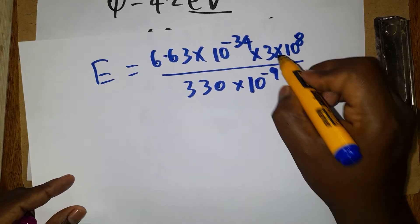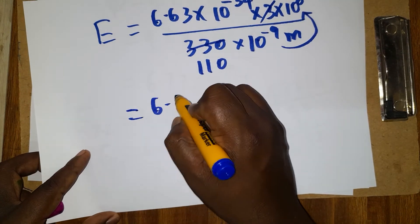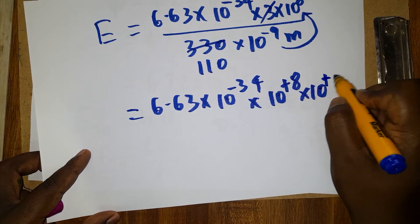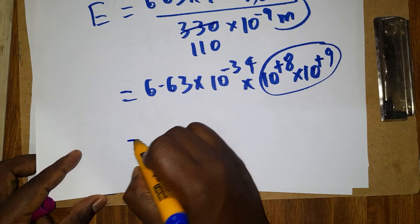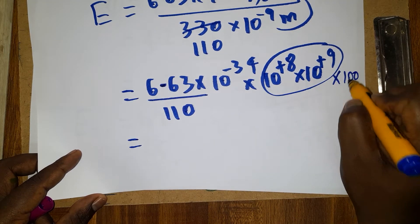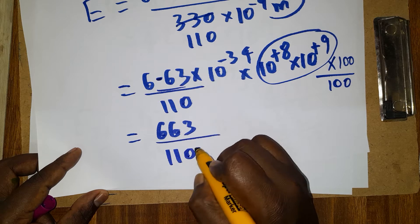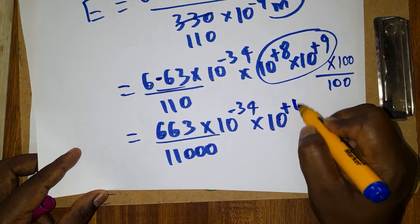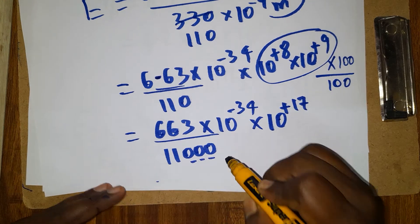Cancelling the 3s gives 110 in the denominator. The numerator becomes 6.63 × 10⁻³⁴ × 10⁸ × 10⁹. Adding the powers: 8 + 9 = 17 in the numerator. To make round numbers, multiply numerator and denominator by 100: giving 663 over 11000, multiplied by 10⁻³⁴ × 10⁺¹⁷.